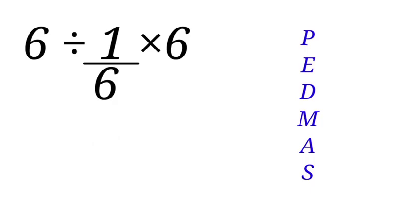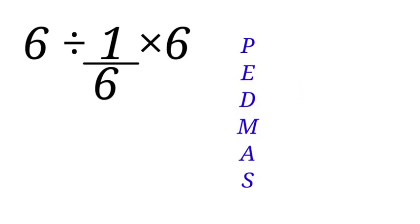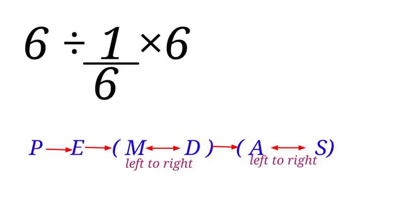Now, let's do the correct solving. 6 divided by 1 over 6 times 6. We will use PEMDAS to solve this question. P is for parenthesis, E for exponent, D division, M multiplication, A addition, S subtraction. And make sure you go from left to right.